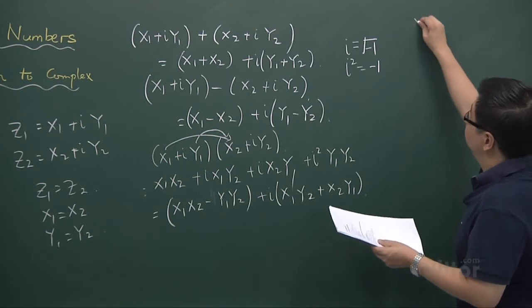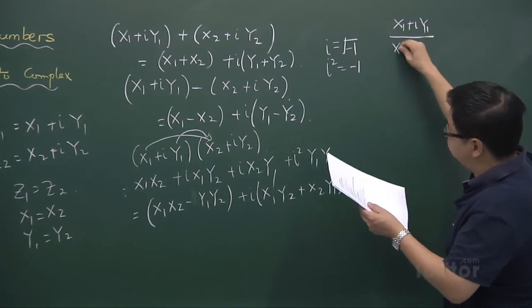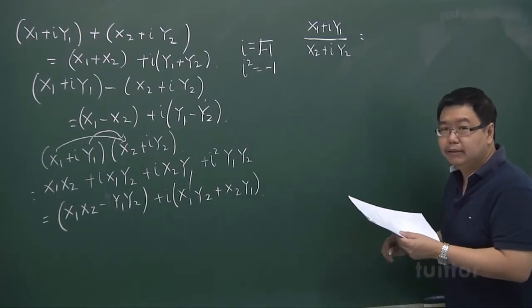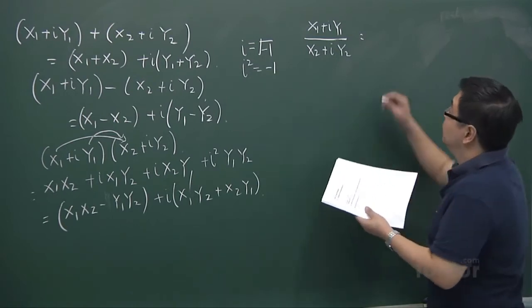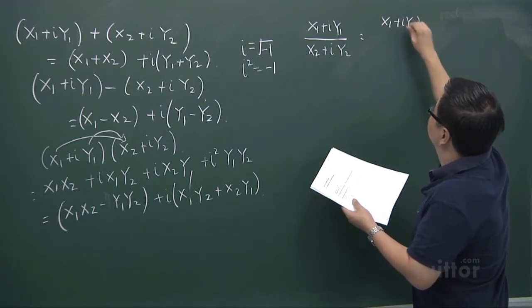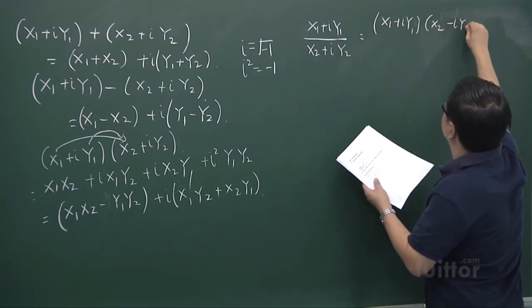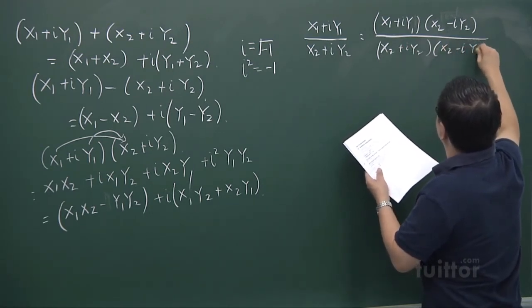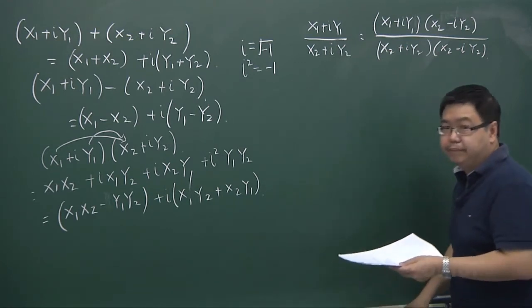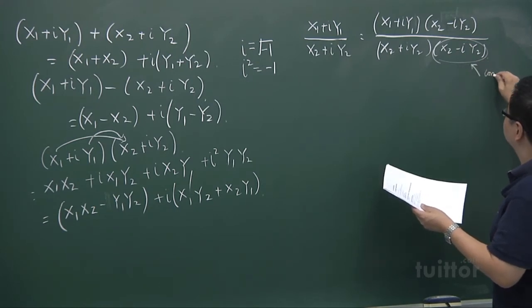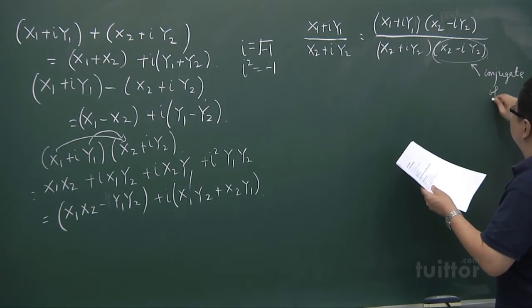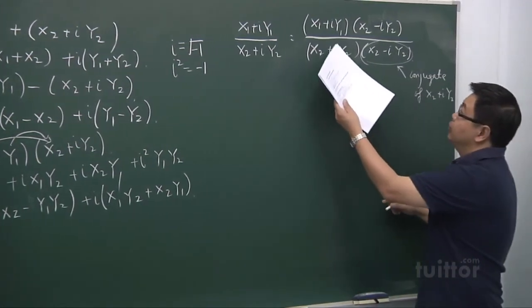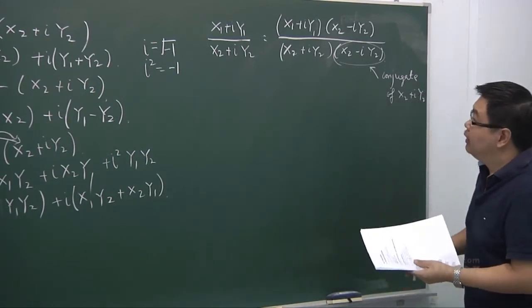And finally, division. If you have x1 plus iy1 divided by x2 plus iy2, what will happen? We do something similar to what we have done back in your secondary school. That is to do rationalization. So we have x1 plus iy1 multiplied by x2 minus iy2. x2 plus iy2 multiplied by x2 minus iy2. Why multiply by this number? Now, this number is actually later on you will learn that it's called conjugate of x2 plus iy2. If you multiply the numerator and denominator by the conjugate of the denominator, the denominator becomes a real number.